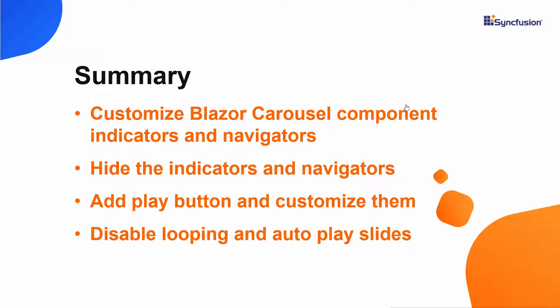In this video, we have seen how to customize the appearance of Blazor carousel indicators and navigators using a template. We also saw how to hide them, and how to add and customize a play button. If you would like to see the working example of the component used in this video, you can download it from the GitHub link in the description below. I have also provided a link where you can see if you qualify for a free license key to use our Blazor products through our community license. If you found this video useful, don't forget to click the like button and subscribe to our channel to watch more videos like this. Thanks for watching.